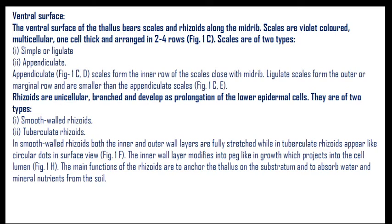In smooth-walled rhizoids both the inner and outer wall layers are fully stretched, while tuberculate rhizoids appear as circular dots in surface view. The inner wall layer modifies into peg-like ingrowths projecting into the cell lumen. The main function of rhizoids is to anchor the thallus on the substratum and absorb water and minerals for nutrition.